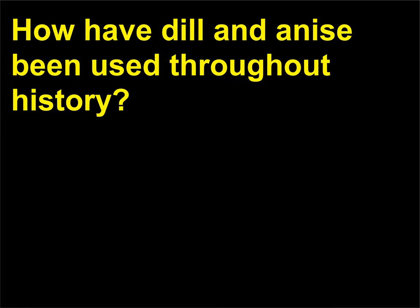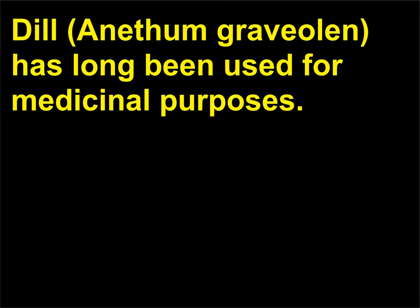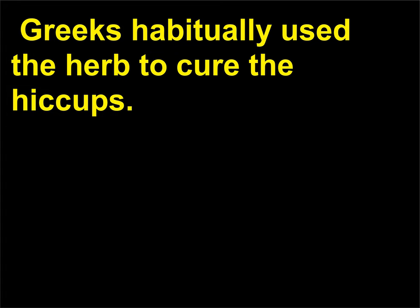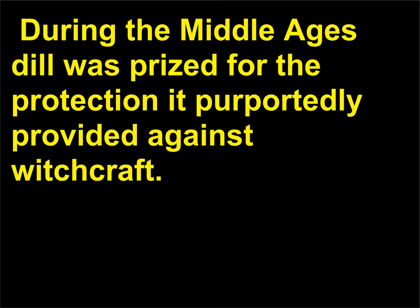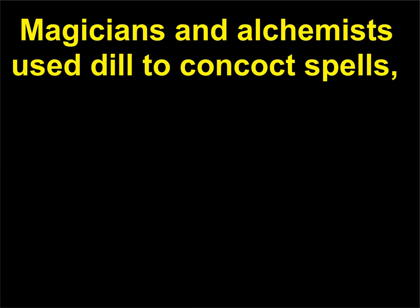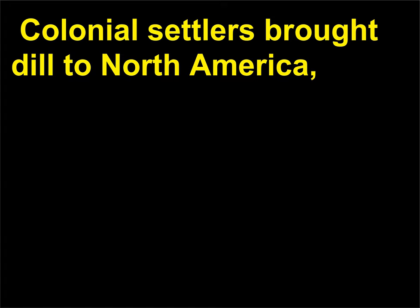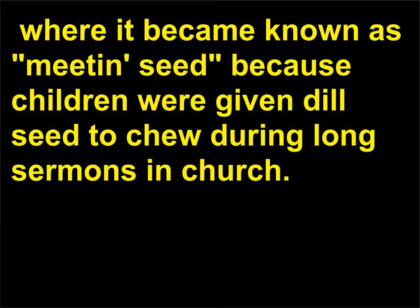How have dill and anise been used throughout history? Dill (Anethum graveolens) has long been used for medicinal purposes. The Egyptians used dill as a soothing medicine. Greeks habitually used the herb to cure the hiccups. During the Middle Ages, dill was prized for the protection it purportedly provided against witchcraft. Magicians and alchemists used dill to concoct spells, while a commonly known wives' tale stated that dill added to wine could enhance passion. Colonial settlers brought dill to North America, where it became known as 'meetinghouse seed' because children were given dill seed to chew during long sermons in church.